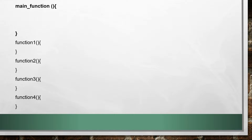For a quick recap: you have a main function, and you can have extra functions like function1, function2, function3, and function4. You use the main method to select and call a function. When you call the main method, you can call different function names.